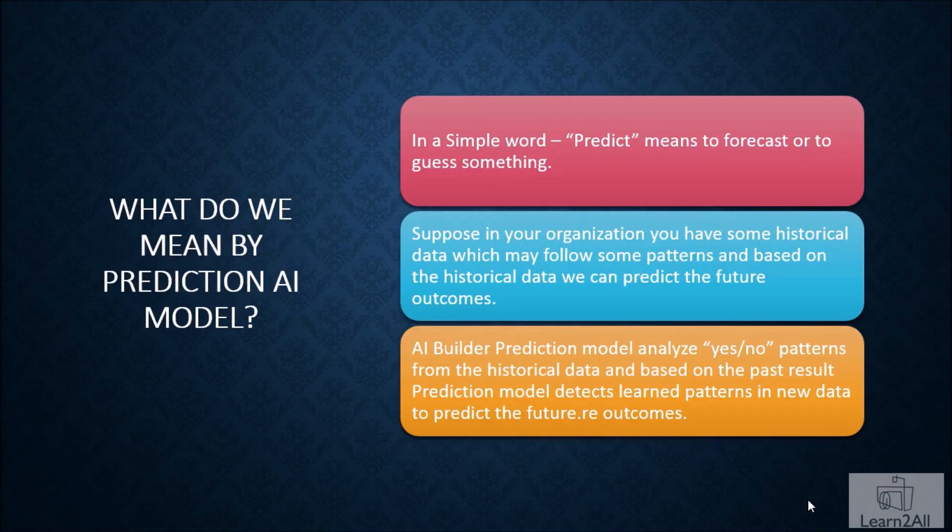The first question that arises in your mind is what do you mean by prediction AI model? What is prediction and how it is useful for our organization data? In a simple word, predict means to forecast or guess something. Suppose in your organization you have some historical data which may follow some pattern. Based on that historical data, you want to predict the future outcome. At that time, this prediction is something which would be very helpful.